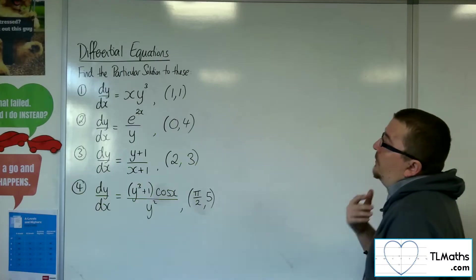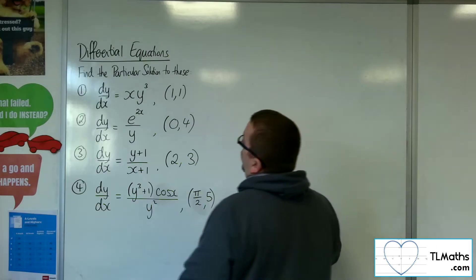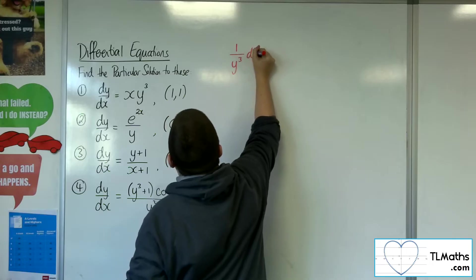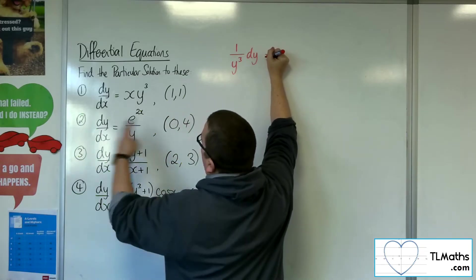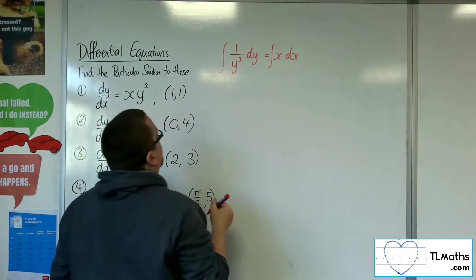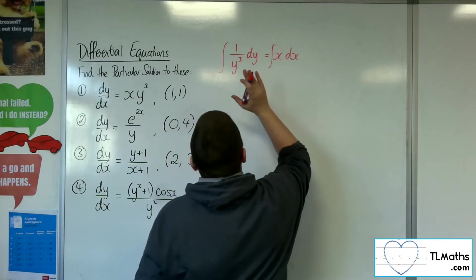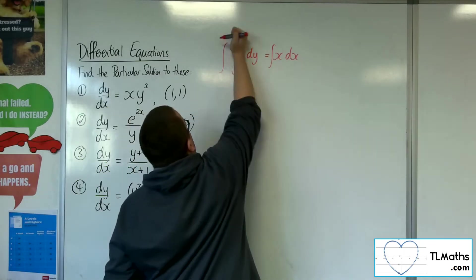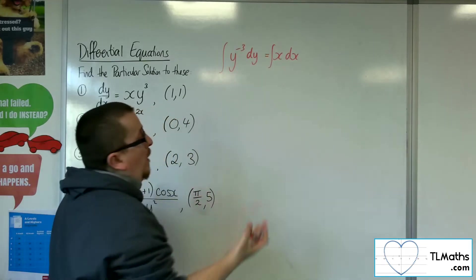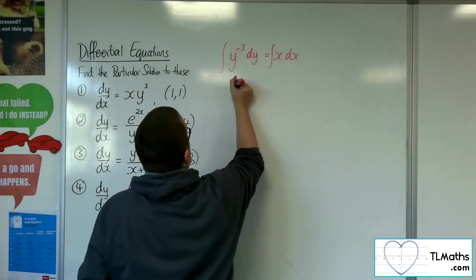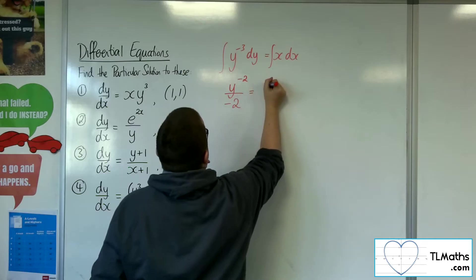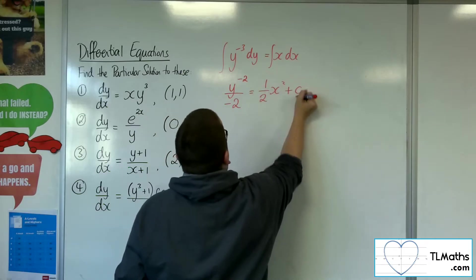For number one, we've got dy/dx equals x times y cubed. I'm going to divide both sides by the y cubed first, leave the dy where it is, and multiply both sides by the dx. Then integrate both sides. This left hand side, the one over y cubed, is the same as y to the minus 3. So adding 1 to the power, dividing by the new power, we're going to get y to the minus 2 over minus 2 is equal to 1/2 x squared plus c.